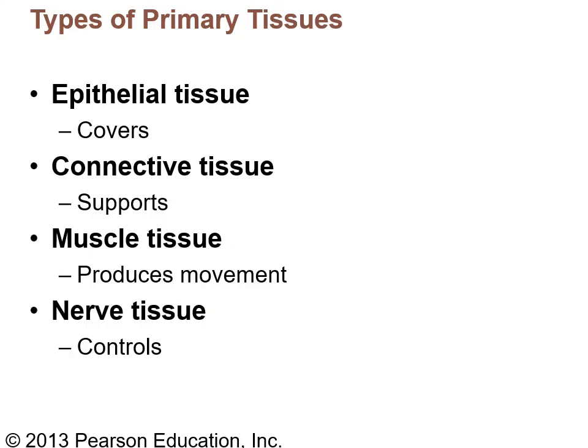There are four primary types of tissue. Epithelial tissue is generally a covering or a lining. Connective tissue is supportive and usually found under epithelial tissue. Muscle tissue is the third group and provides movement. The fourth group is nervous tissue, which is a controlling tissue because it passes along electrical impulses from one place to another.